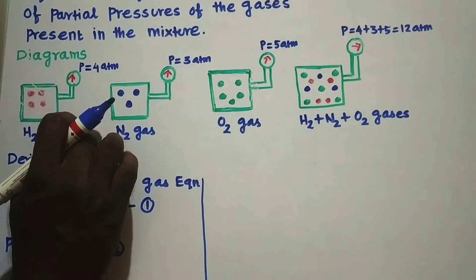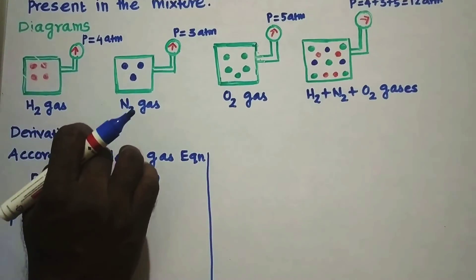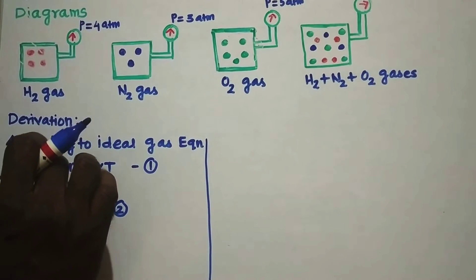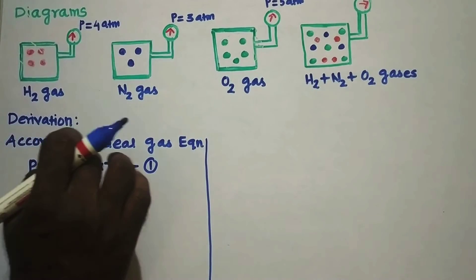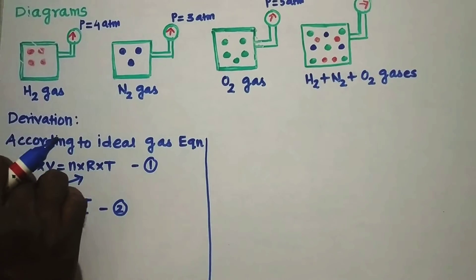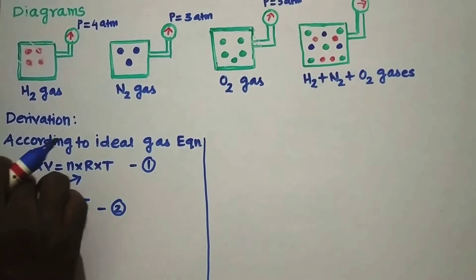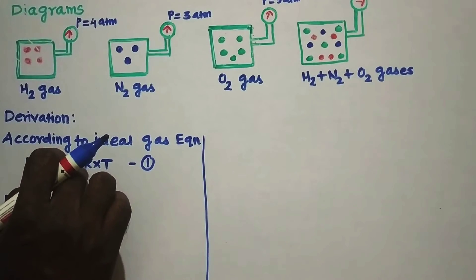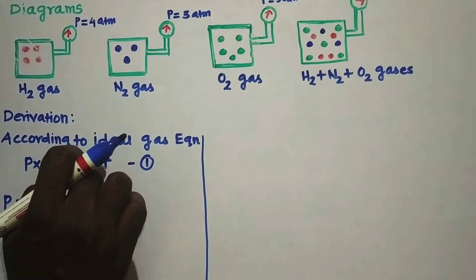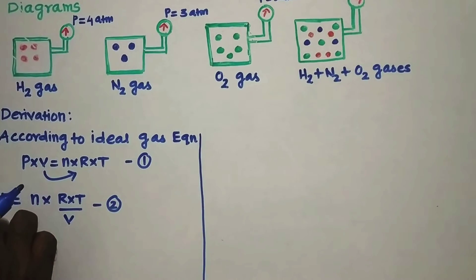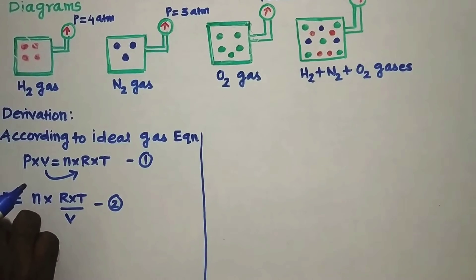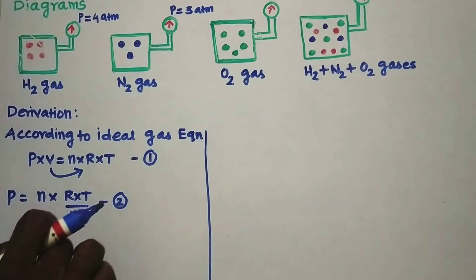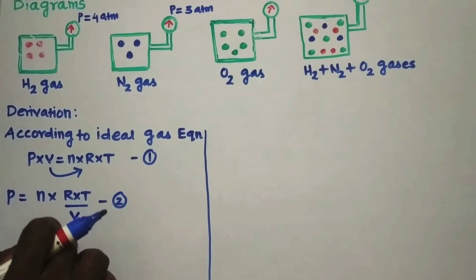Now we are going to see the derivation. According to the ideal gas equation, P into V is equal to N into R into T, where P is the pressure, V is the volume, N is the number of moles, R is the gas constant, and T is the temperature. Rearranging, P is equal to N into RT divided by V.